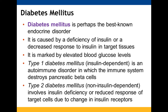Diabetes mellitus is probably the best-known endocrine disorder, caused when insulin is either deficient or the response to insulin in target tissues is not effective. Type 1 is an autoimmune disorder where the immune system attacks and destroys pancreatic beta cells, causing insulin deficiency. Type 2 occurs when insulin is deficient or target cells are not responding to insulin properly due to changes in their receptors.